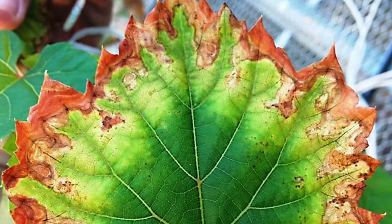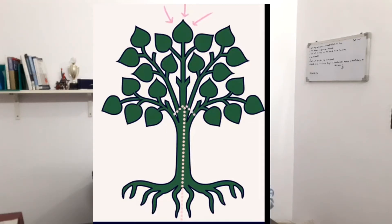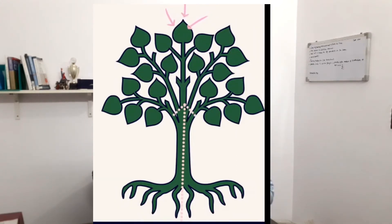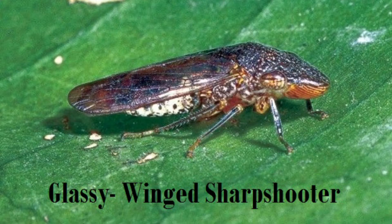Number six is Pierce's Disease, caused by the bacterium Xylella fastidiosa. This bacteria lives in the xylem of the plant — the water transport system through which all water taken up by the roots travels to the plant canopy. The bacteria disturbs the water supply, causing leaves to become yellow, dry, and drop. It is spread by insects.